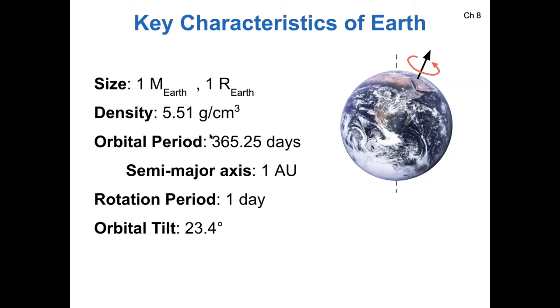Our orbital period is 365.25 days because our semi-major axis is 1 AU. And our rotation period is 1 day. And then like we just went over, the orbital tilt, axial tilt, is 23.4 degrees. So we'll come back to the values for all the other planets as we go throughout the term.